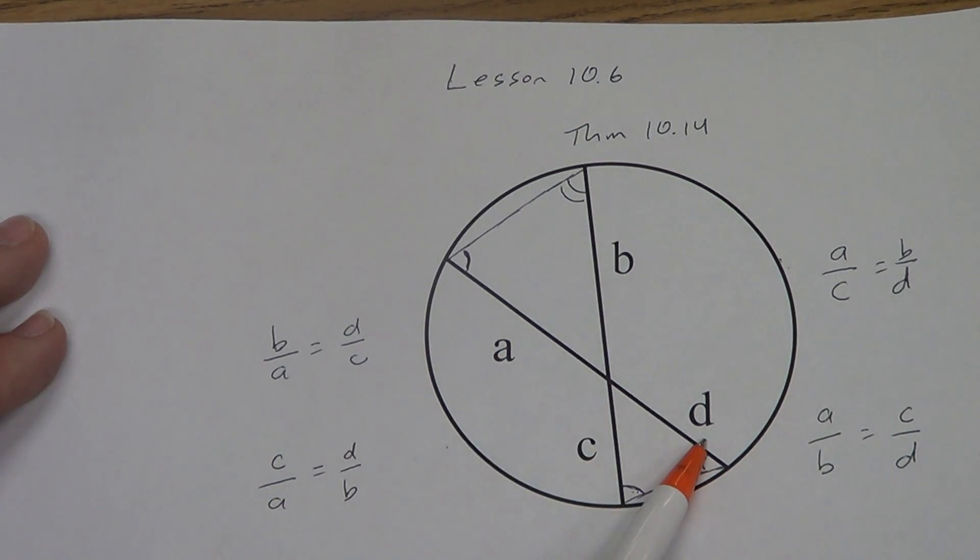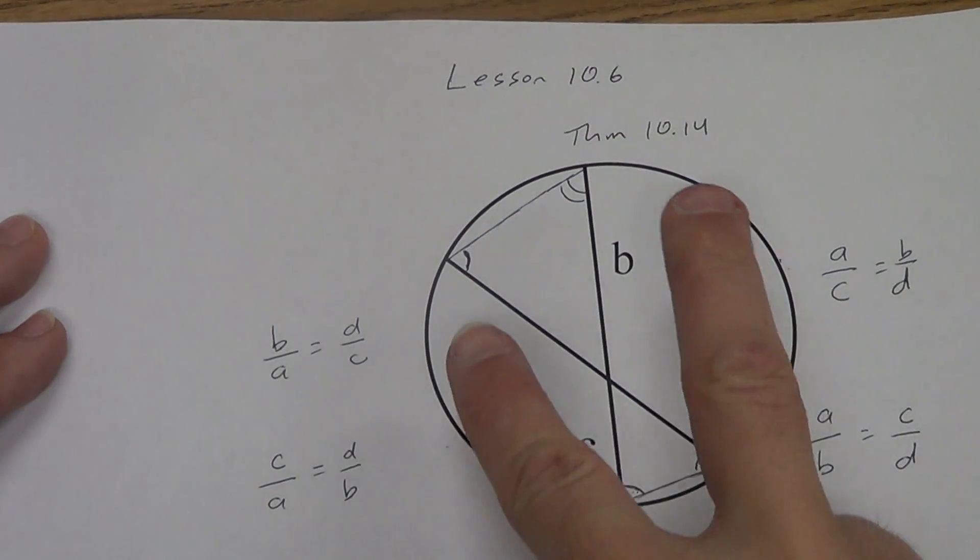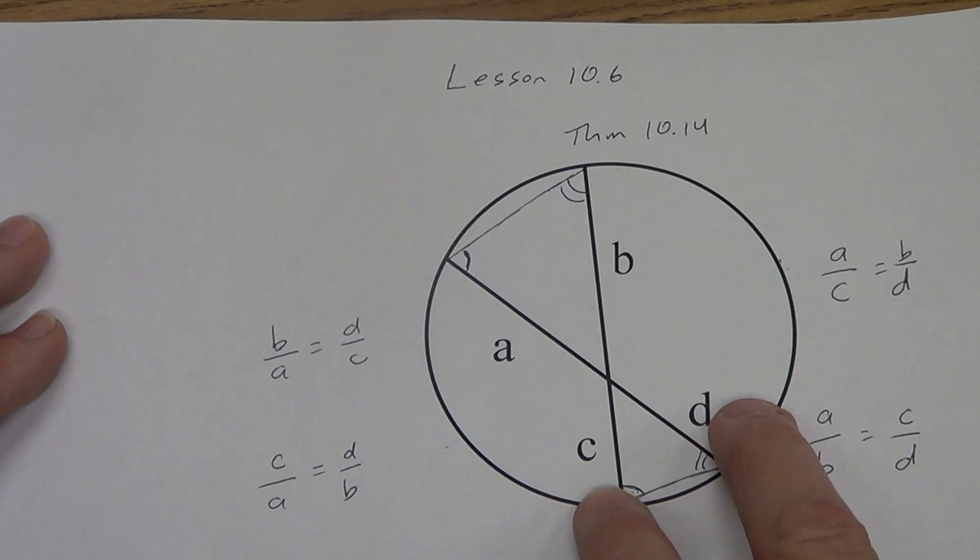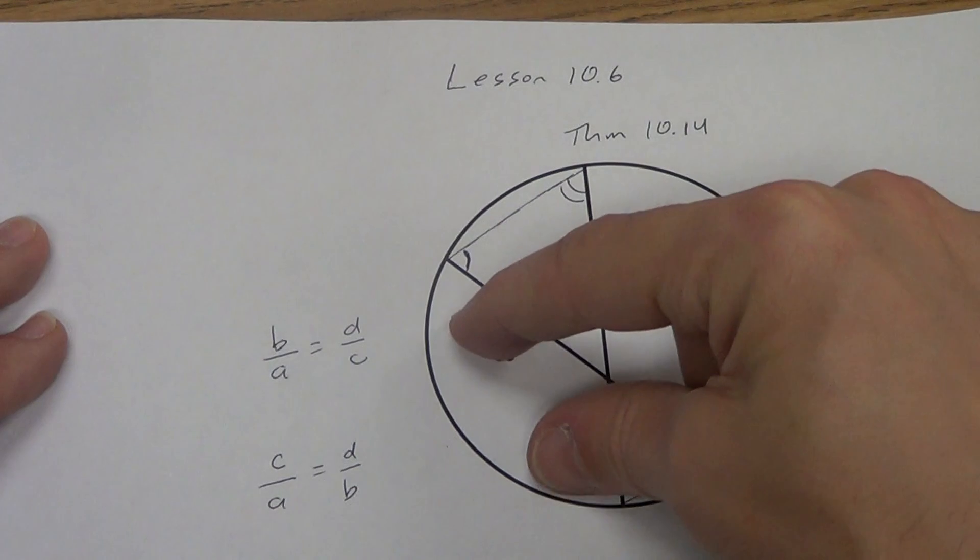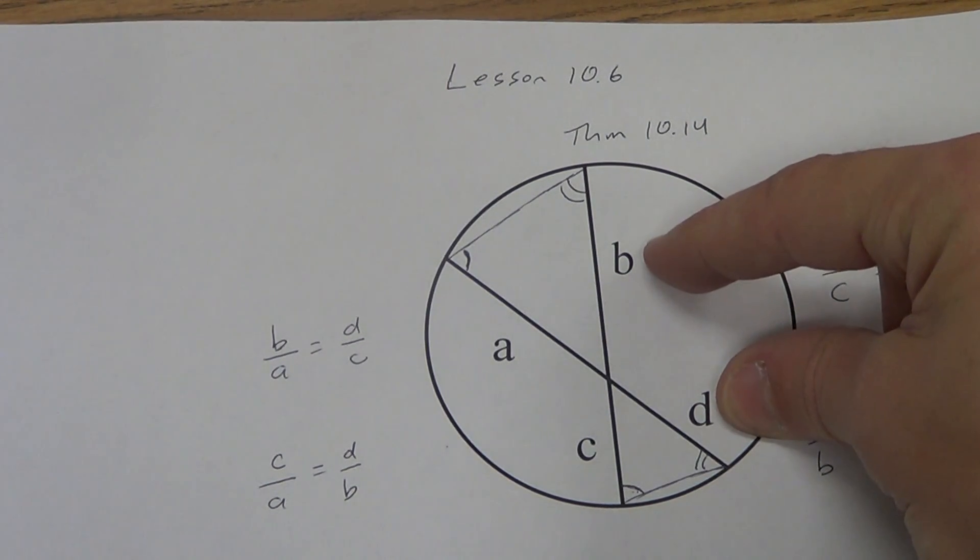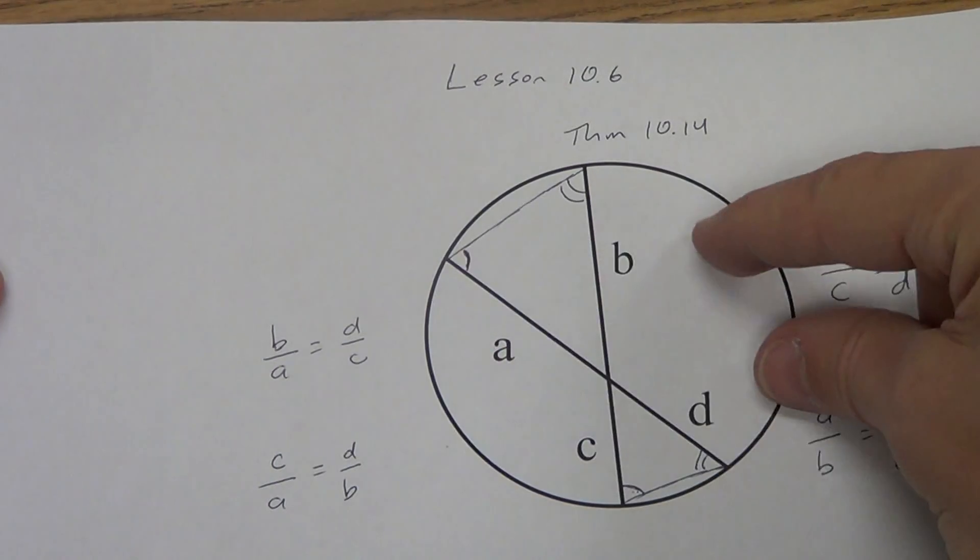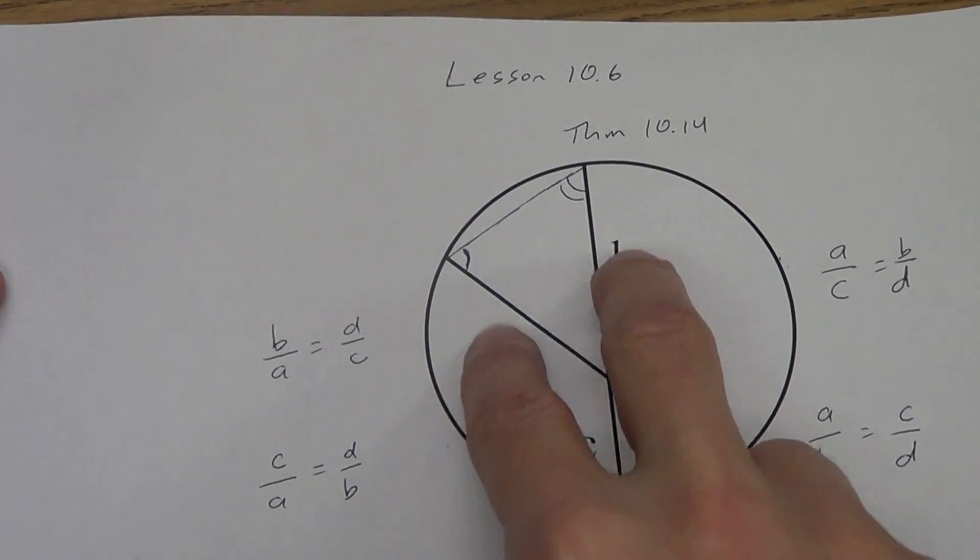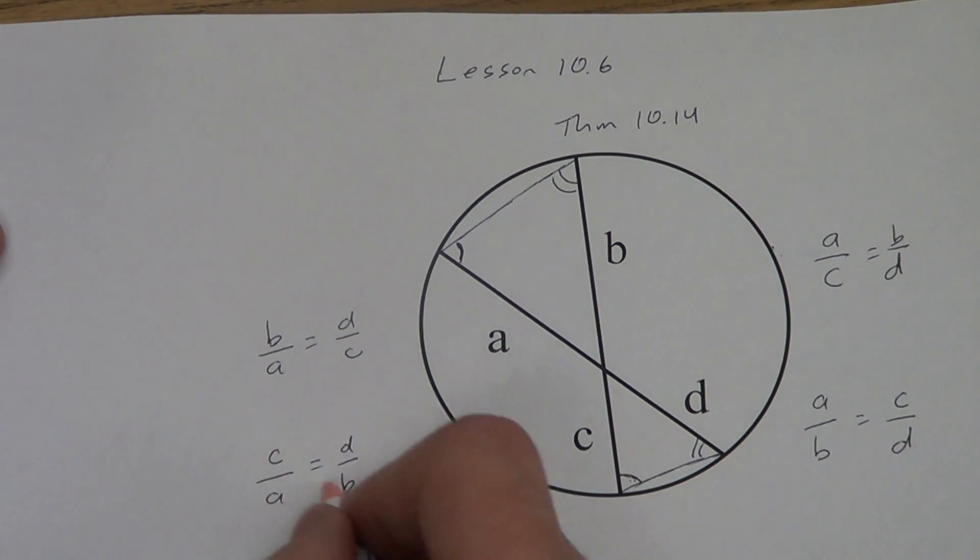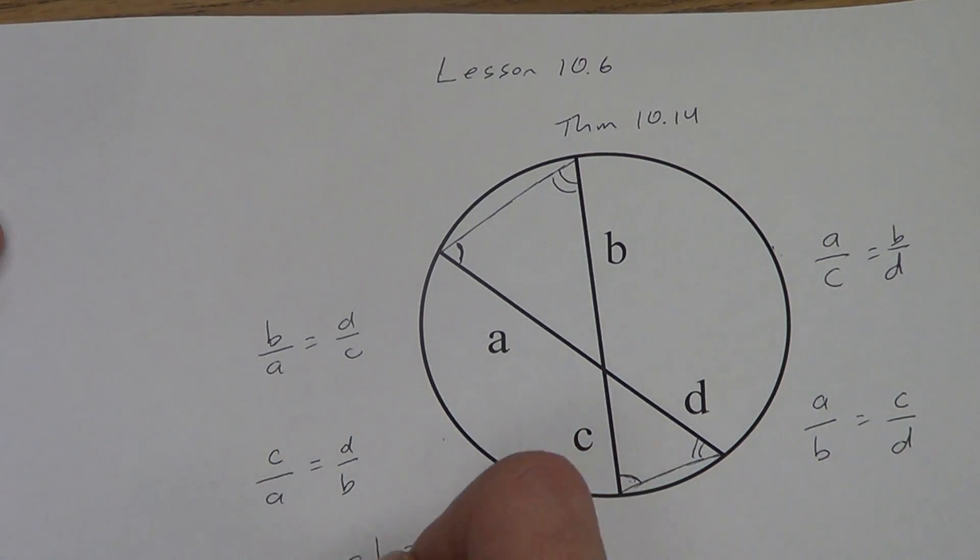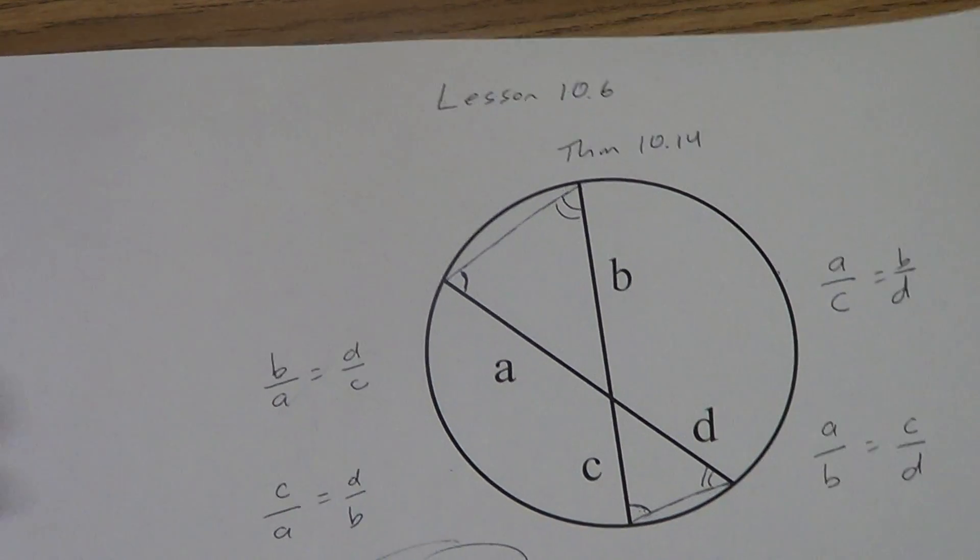What you cannot do is put a over d and b over c. You are not moving in the same direction. When we did a over c equals b over d, we were moving in the same direction, this direction. With a over b equals c over d, we were moving in this direction. With b over a equals d over c, we were moving in this direction. And then with c over a equals d over b, we were moving in this direction. All right, so we can set up a proportion, we cross multiply. Any of these, if you look at any of them, we're going to get cb equals ad. They all give us the same exact thing. So that's how we're going to solve those. That's the first theorem, theorem 10.14.